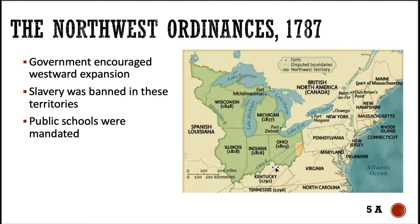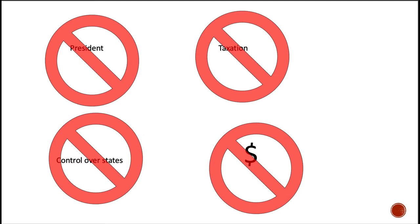So we have these new territories, and slavery is not allowed here. Naturally, many southern states would see that as a threat to their way of life, the way they make a living. Let's recap the weaknesses of the Articles of Confederation: no president, the national government had no control over the states, they didn't have the power to raise money for the things that they needed, and they didn't have the power to tax the states — that was left up to the states as well.